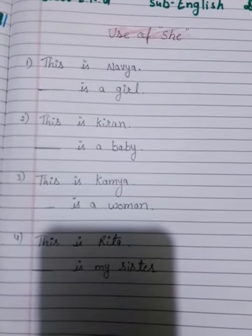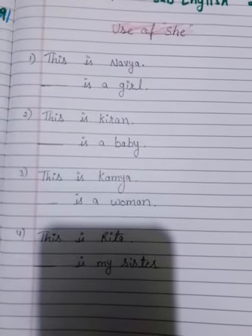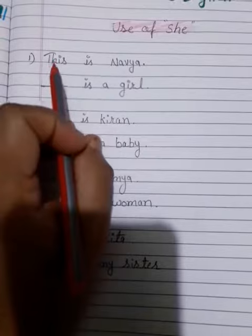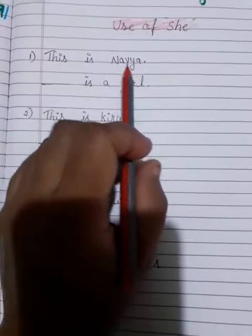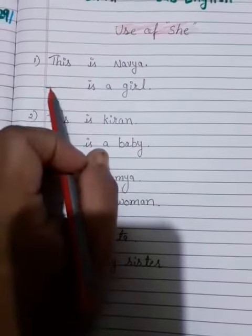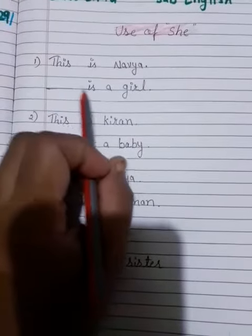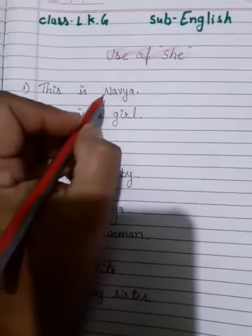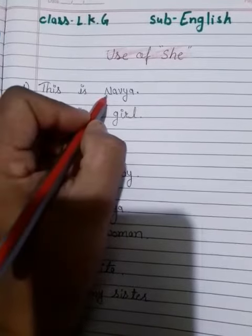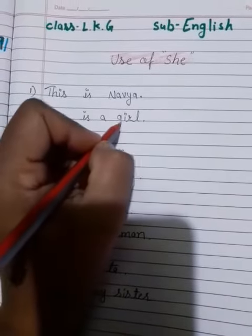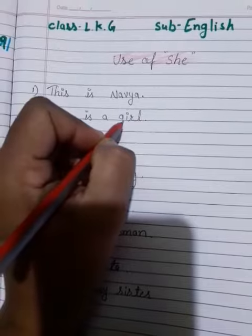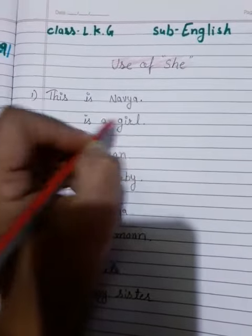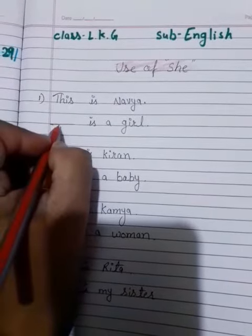Dear students, listen carefully. This is Navya. Das is a girl. Navya and girl — these are two words that are female. These are female. So, what do we use here?